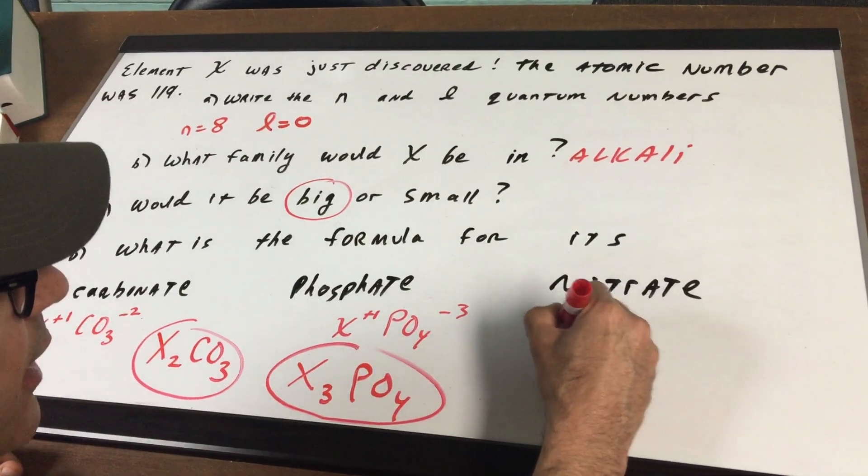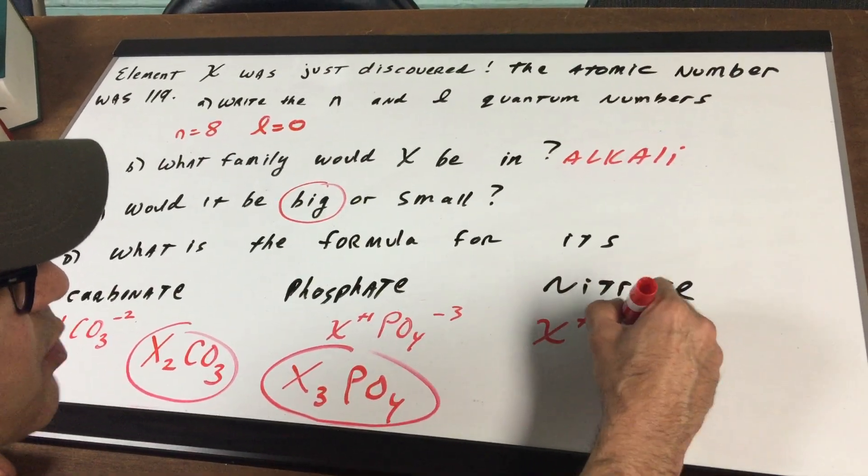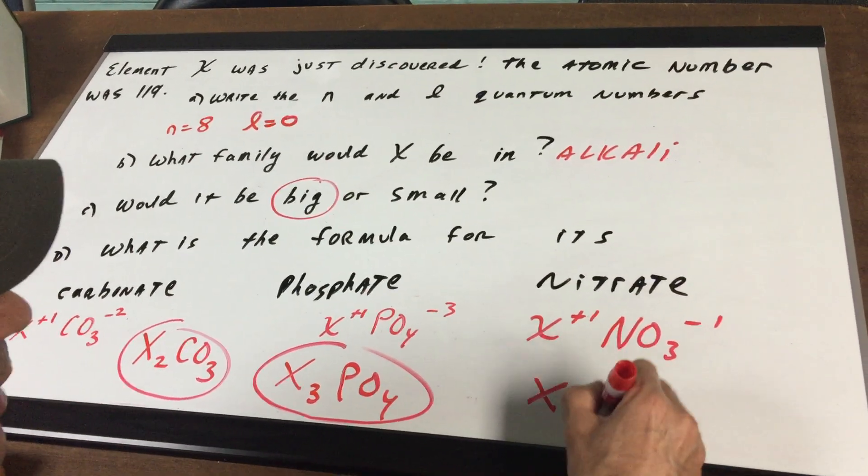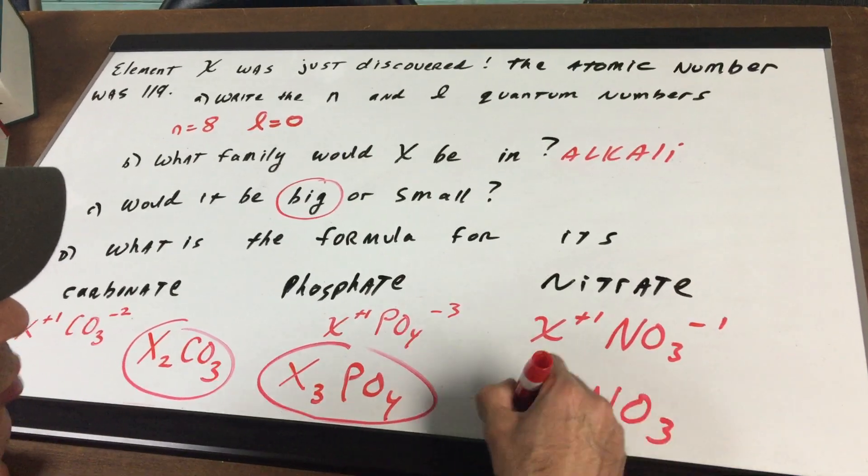And finally, again, X is plus 1, nitrate is NO3 minus 1 and that would give me an XNO3.